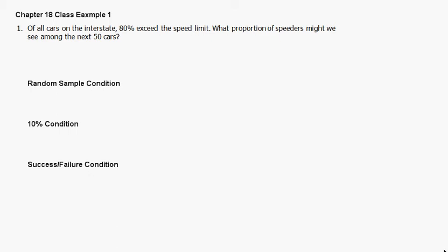This is a class example from chapter 18. The population proportion: of all cars on the interstate, 80% exceed the speed limit. What proportion of speeders might we see among the next 50 cars?